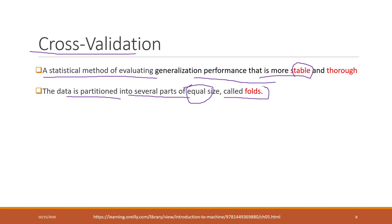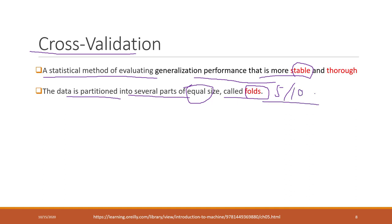Each part is called folds. Sometimes we might have five folds or sometimes we use ten folds. Here you can see we divide the data, the same data set, into those five folds. We have first fold, second fold, we have five folds.